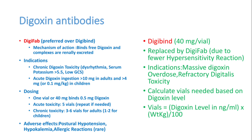The definitive treatment for digoxin toxicity is digoxin antibodies — DigiFab is the preferred treatment. Its mechanism is to bind free digoxin, form complexes, and allow renal excretion. Indications include chronic digoxin toxicity with arrhythmia, serum potassium more than 5.5 mEq/L, low GCS, or acute digoxin ingestion more than 10 mg in adults or 0.01 mg/kg in children. Dosing: one vial (40 mg) binds 0.5 mg digoxin; for acute toxicity give five vials and repeat if needed; for chronic toxicity three to six vials for adults and one to two vials for children. Adverse effects include postural hypotension, hypokalemia, and allergic reactions. DigiBind (40 mg per vial) is an alternative.